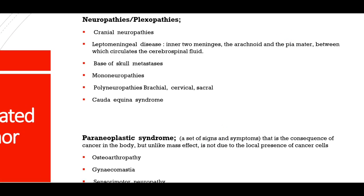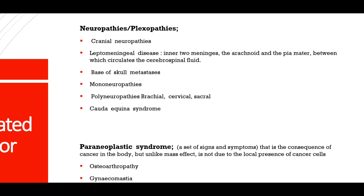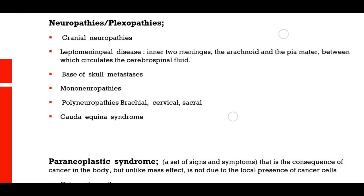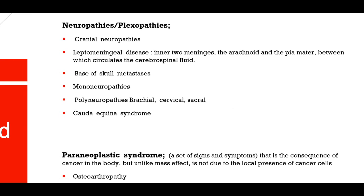Neuropathic pain can be caused by plexopathies, cranial neuropathies when cranial nerves are involved, leptomeningeal disease affecting the arachnoid and pia mater between which cerebrospinal fluid circulates, base of skull metastases, mononeuropathies when a branch of a nerve is involved, and polyneuropathies when multiple nerves such as brachial, cervical, or sacral are involved. Cauda equina syndrome occurs when the bundle of nerves below the spinal cord is damaged, causing perianal pain radiating to the legs and possible loss of urinary and fecal continence.